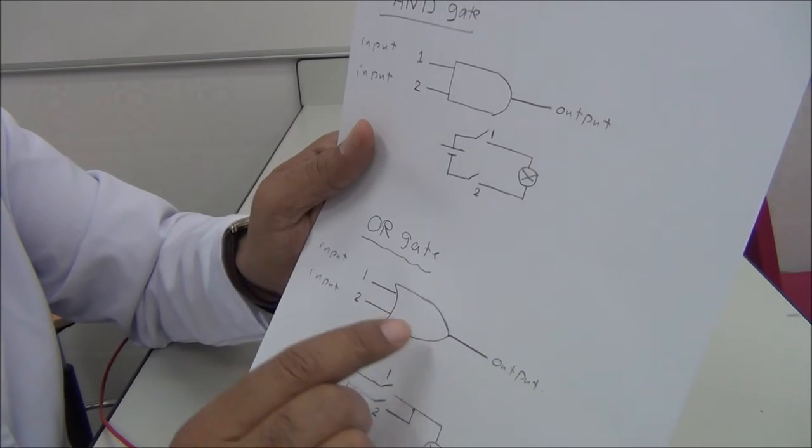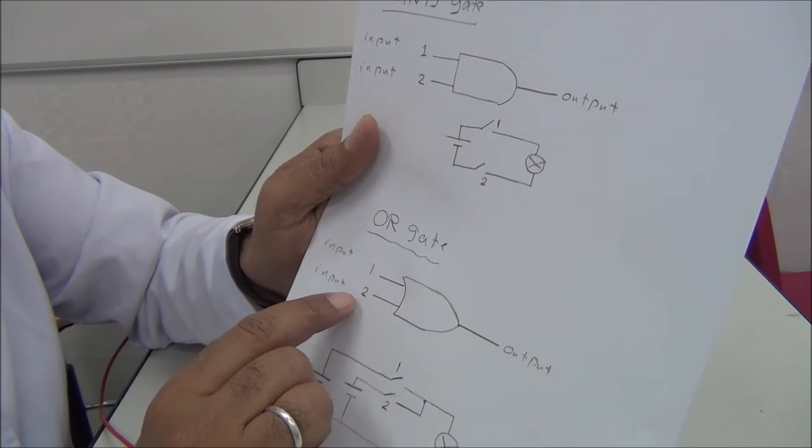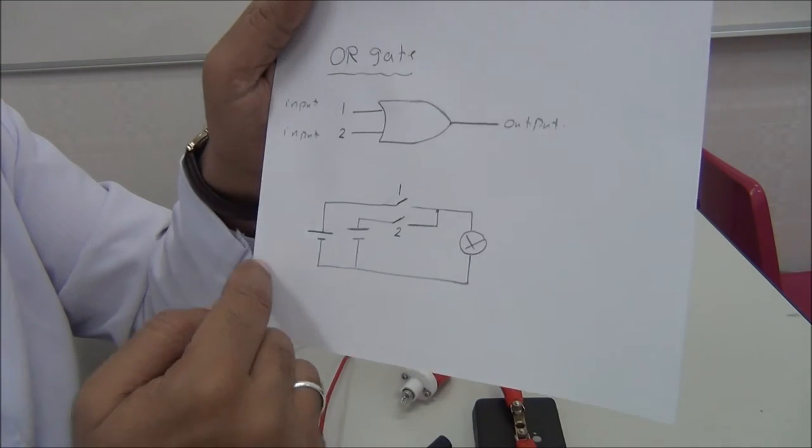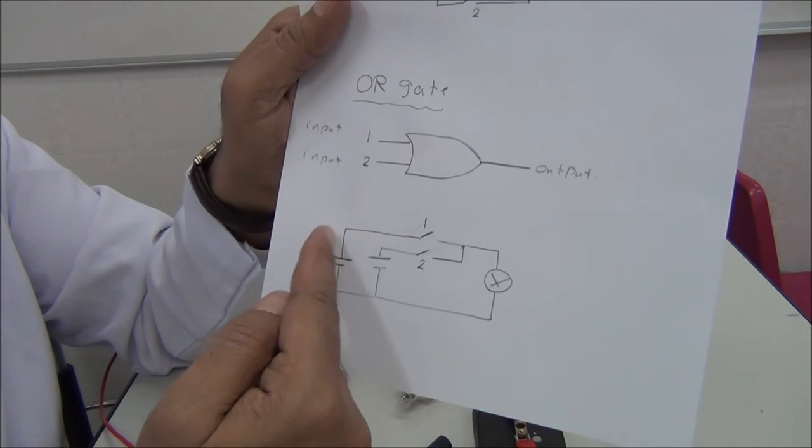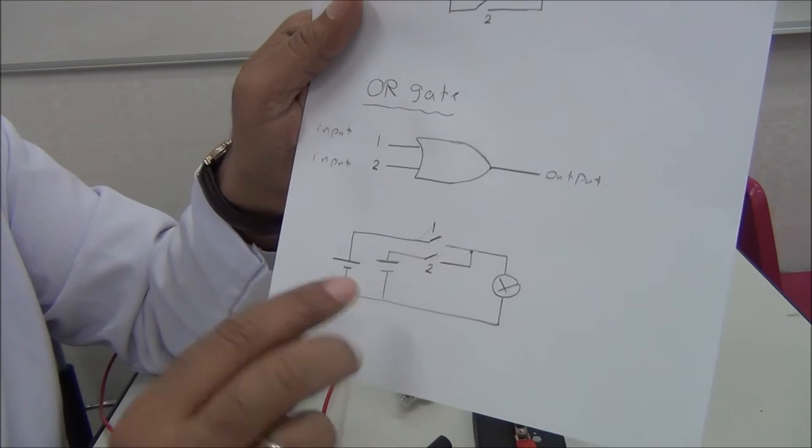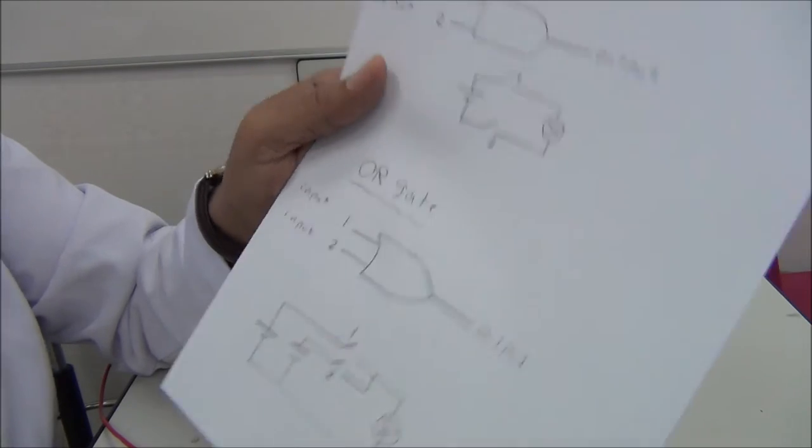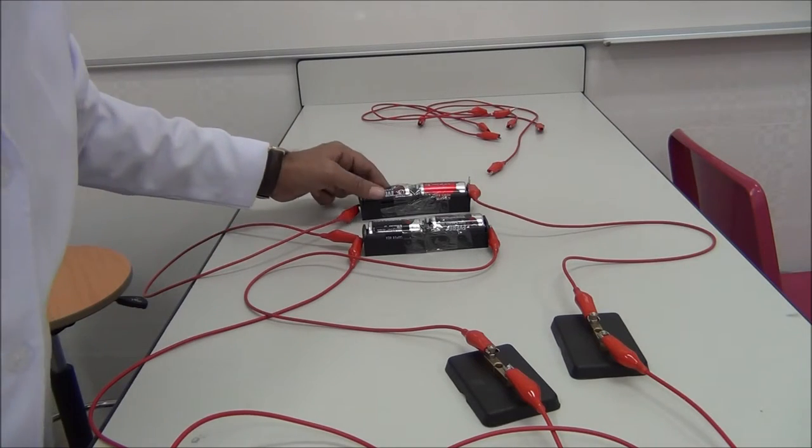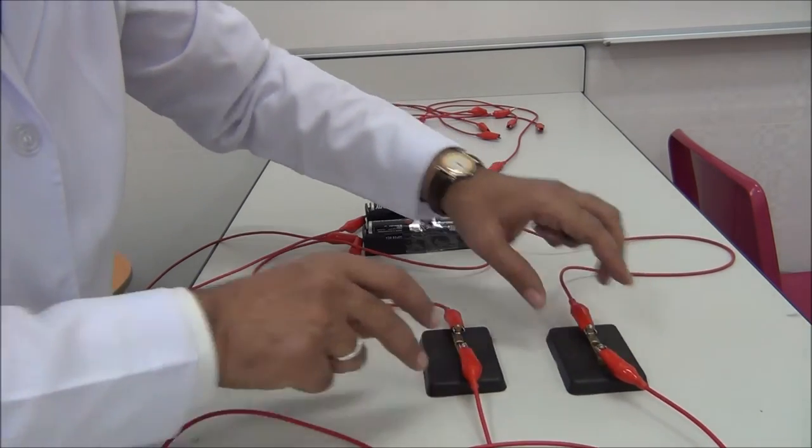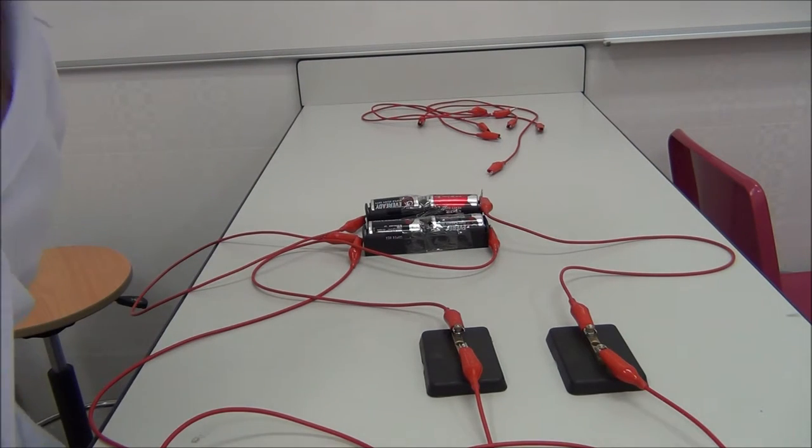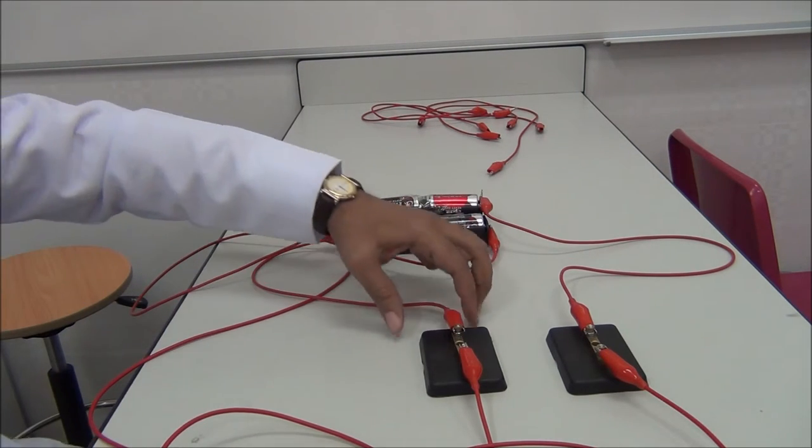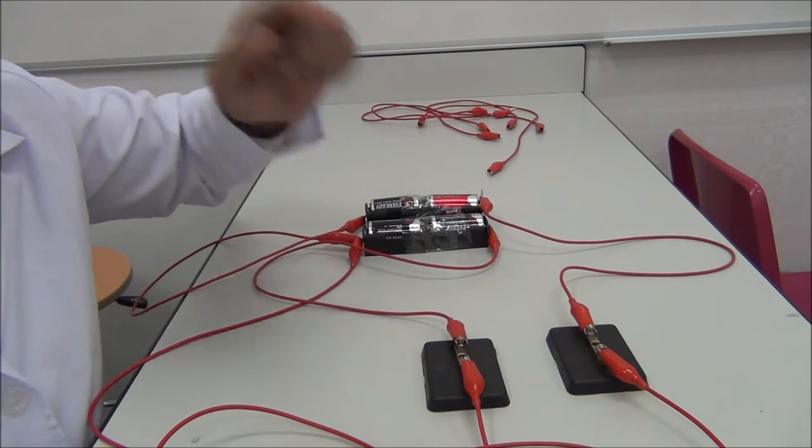We perform that circuit. It contains two switches, two cells, one lamp. Now we perform the experiment as shown. So we have two switches: we have switch one and switch two, and that is the bulb.